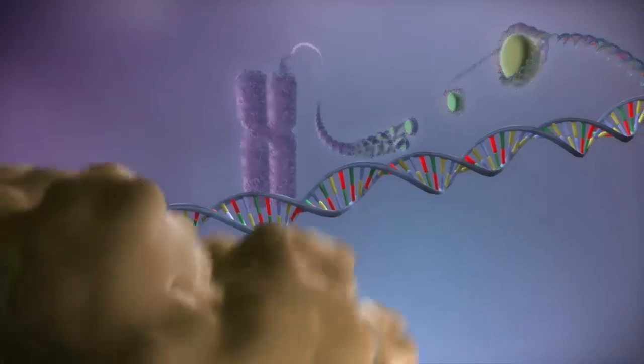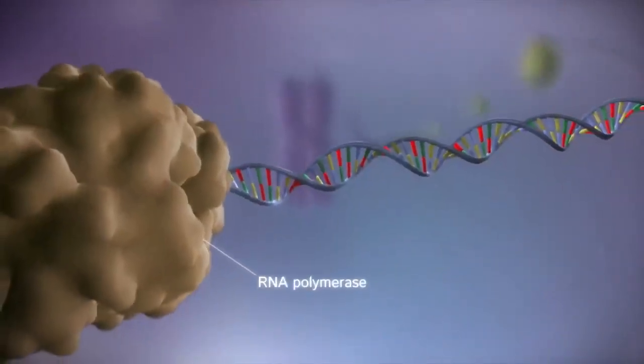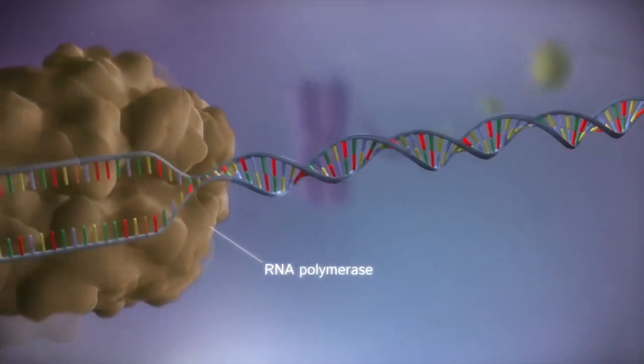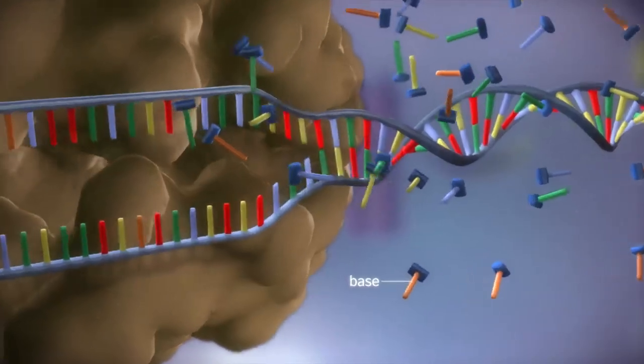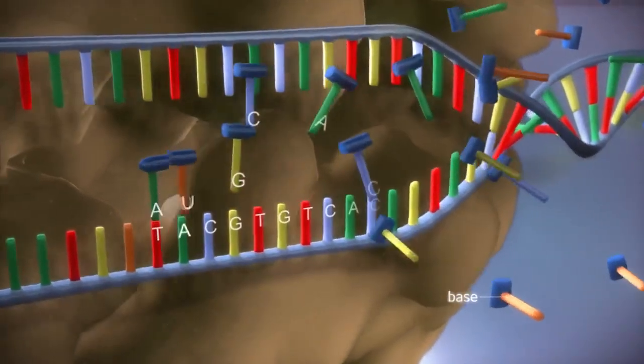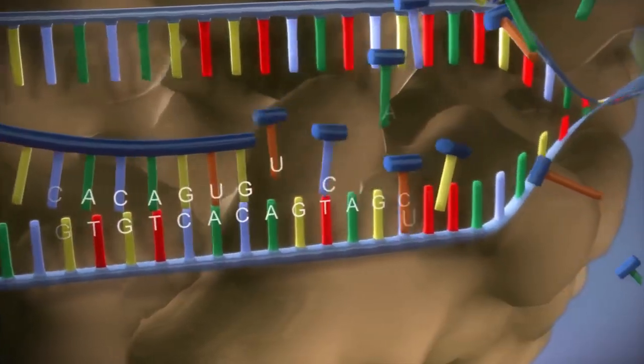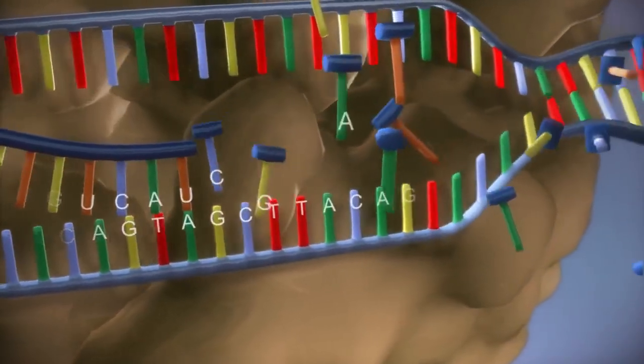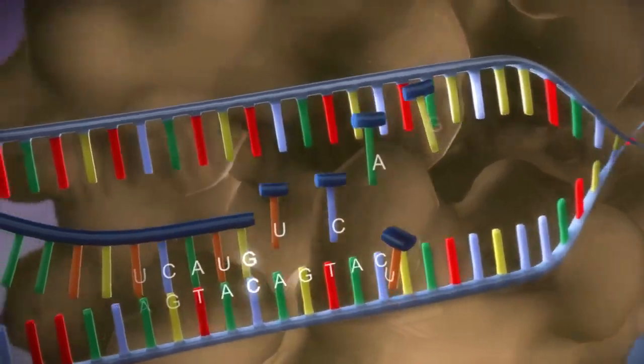When a gene is switched on, an enzyme called RNA polymerase attaches to the start of the gene. It moves along the DNA, making a strand of messenger RNA out of free bases in the nucleus. The DNA code determines the order in which the free bases are added to the messenger RNA. This process is called transcription.